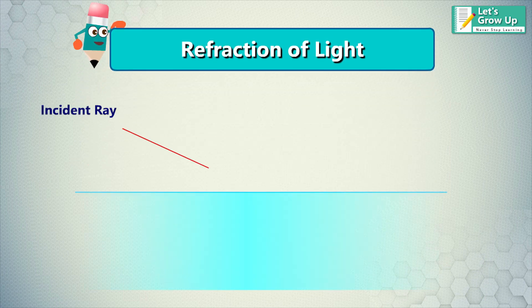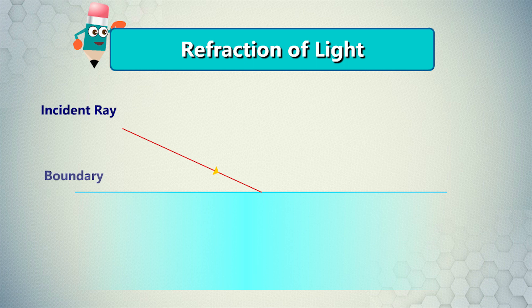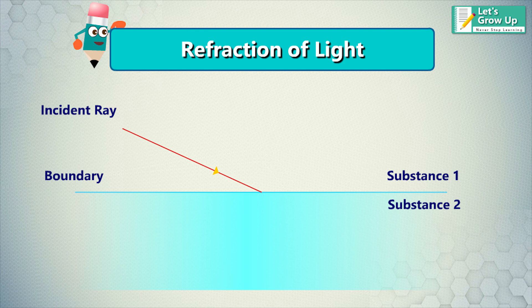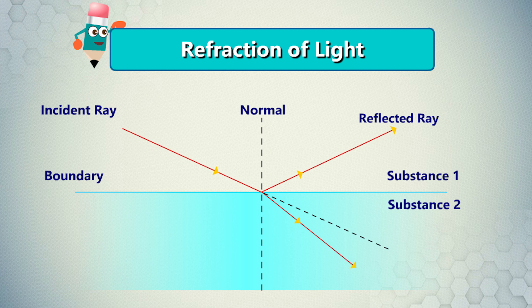When light traveling in one transparent medium encounters a boundary with a second transparent medium, for example, air and glass, a portion of the light is reflected and a portion is transmitted into the second medium. As the transmitted light moves into the second medium, it changes its direction of travel, that is refracted.